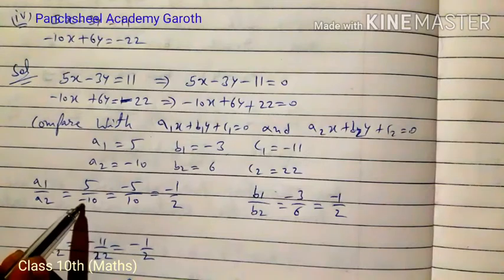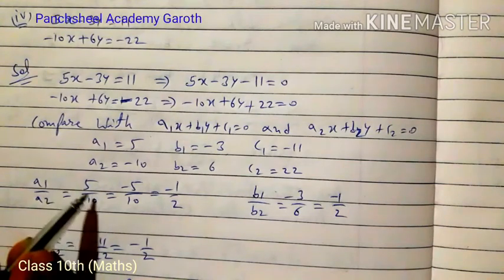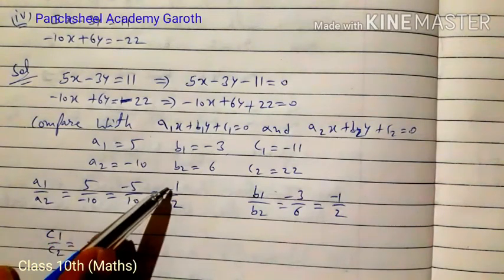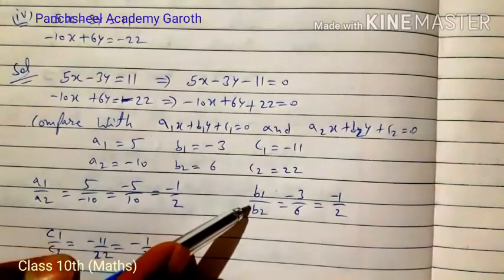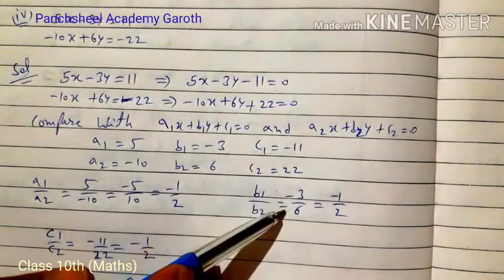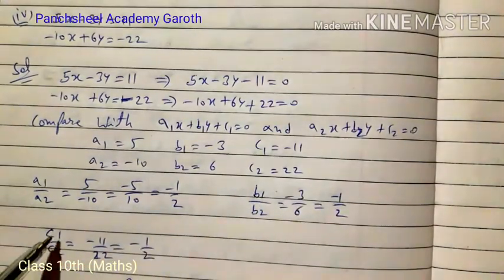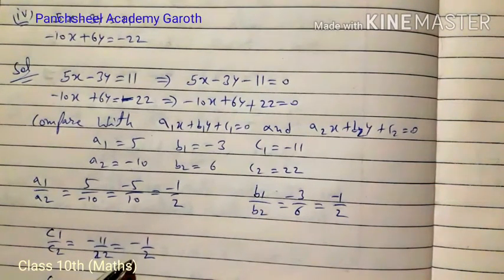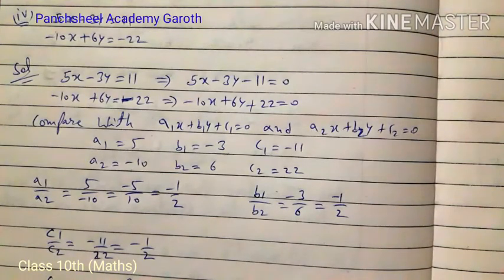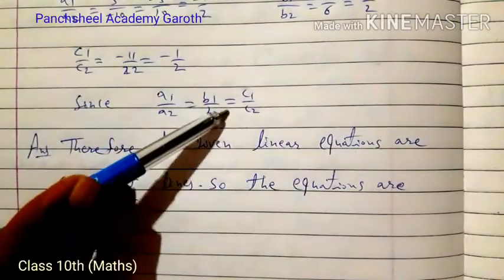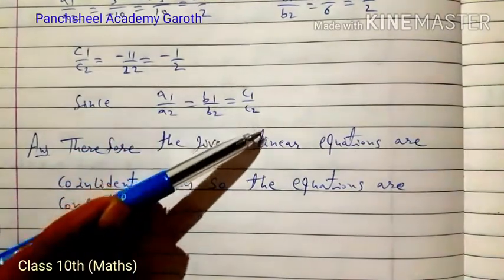So a1 = 5, b1 = -3, c1 = -11, and a2 = -10, b2 = 6, c2 = 22. Finding ratios: a1/a2 = 5/(-10) = -1/2. b1/b2 = -3/6 = -1/2. c1/c2 = -11/22 = -1/2. All three ratios are equal.